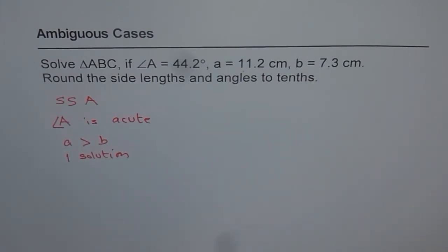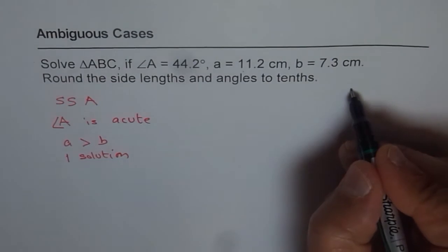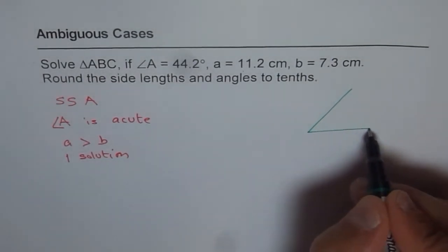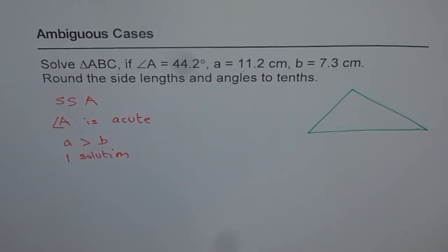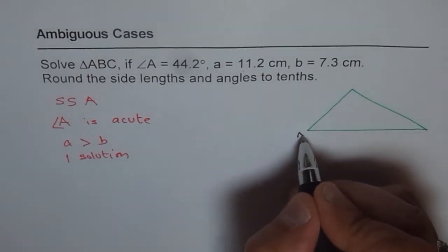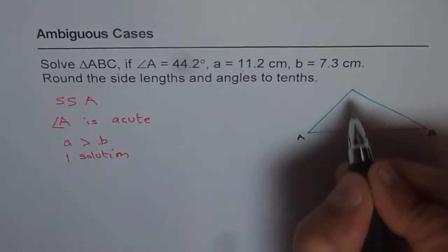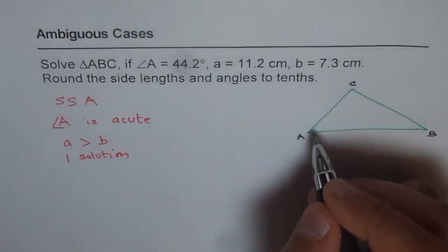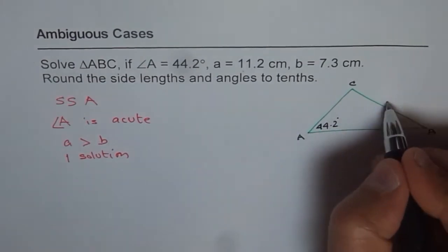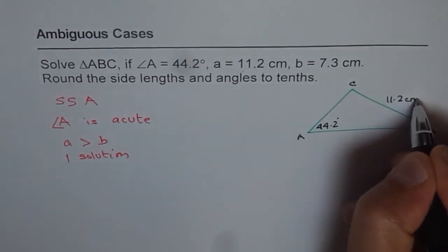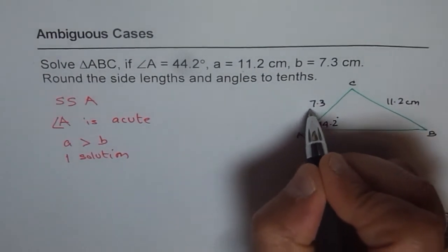And that is the side a which is longer than b. So we can write down vertices as ABC. Angle A is 44.2 degrees. Side opposite is 11.2 centimeters. For B it is 7.3 centimeters.